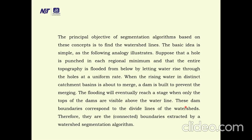The basic idea is illustrated by the following analogy: suppose a hole is punched at each regional minimum and the entire topography is flooded from below by letting water rise through the holes at a uniform rate. When the rising water in distinct catchment basins is about to merge, a dam is built to prevent the merging. The flooding will eventually reach a stage when only the tops of the dams are visible above the water line. These dam boundaries correspond to the divide lines of the watershed and are the connected boundaries extracted by the watershed segmentation algorithm.